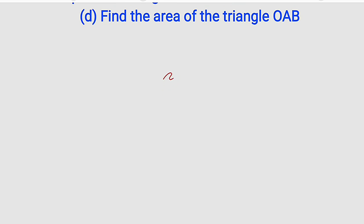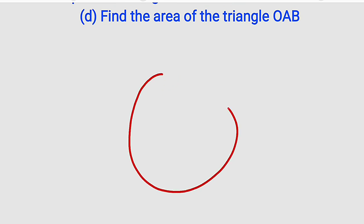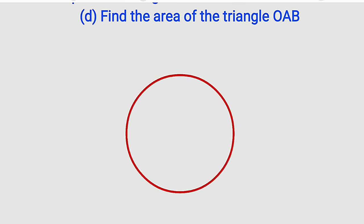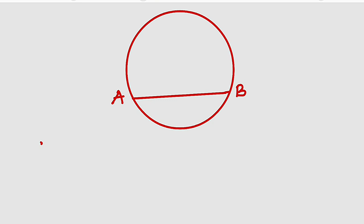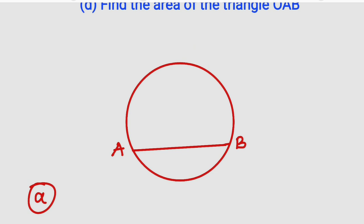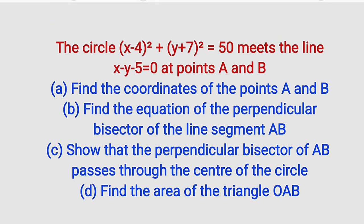First of all, I would like to make a sketch of this. Suppose we have a circle like this, and we have a line segment like this. Let's call this A and let's call this B. So we are looking for the coordinates of A and B. To find the coordinates of these two points A and B, all we have to do is substitute the equation of the line into the equation of the circle.